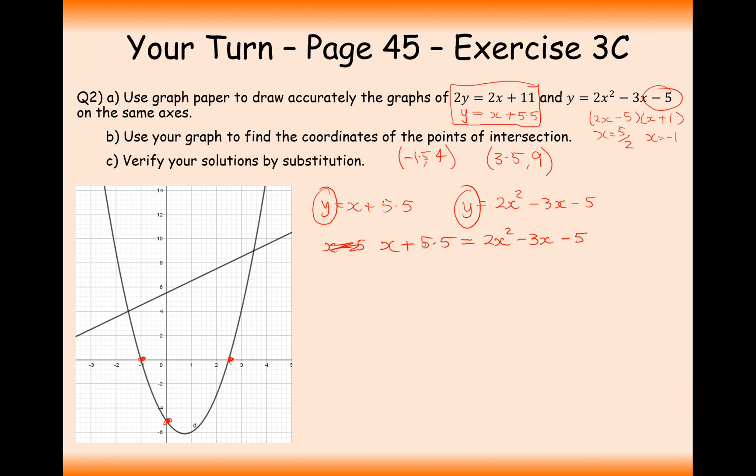Now, we've got a 5.5 here. That's not pretty. So, we'll double the whole equation. So, 2x plus 11 equals 4x squared minus 6x minus 10. We've doubled everything there to get rid of the decimal. Take everything on to the right. So, 4x squared minus 8x minus 21.